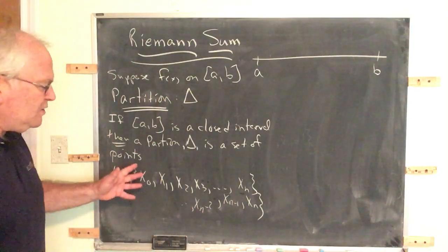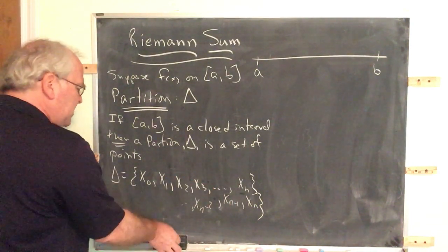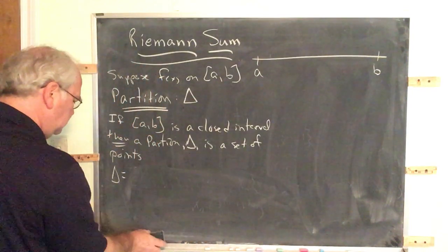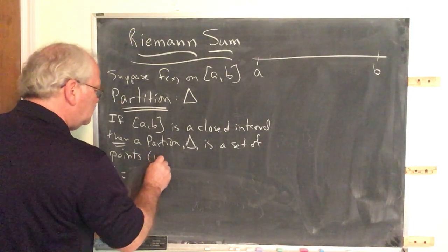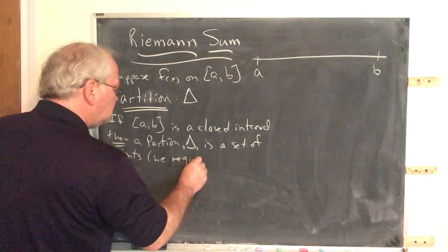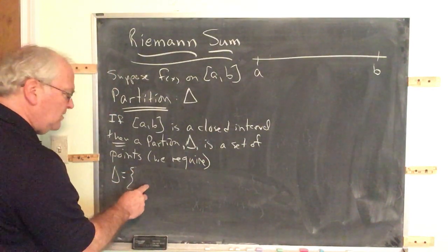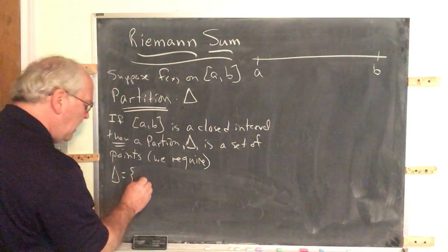Now, there is a requirement with these points. We require that x0, the first point of the partition, must equal a.